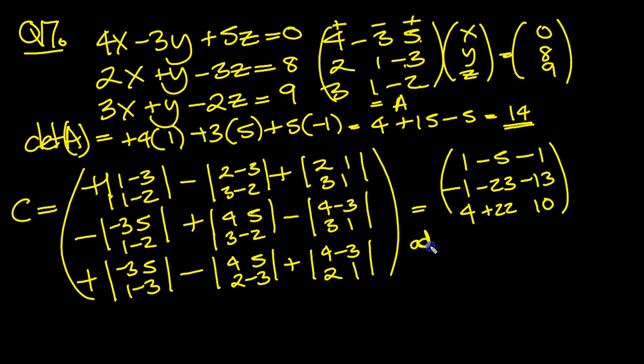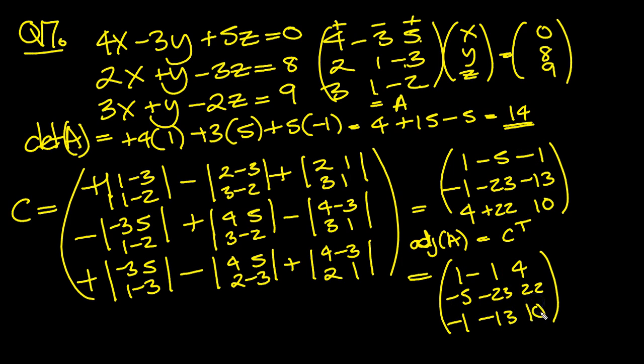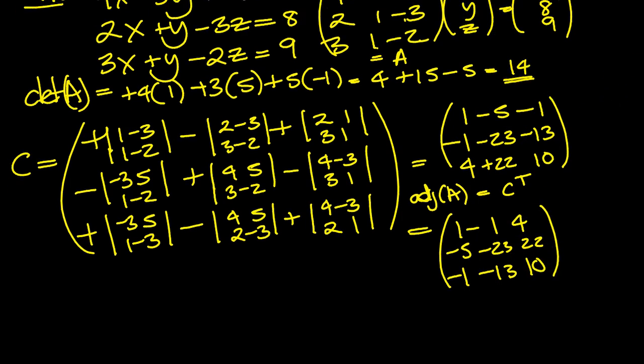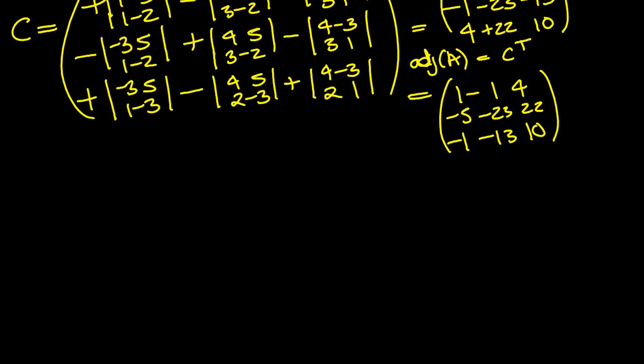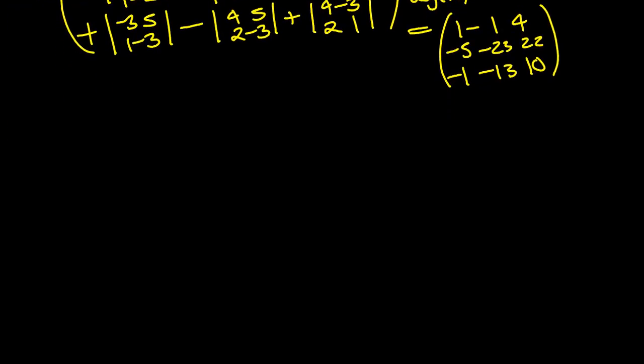There's the cofactor matrix, so now we can write the adjoint of the matrix A, which is C transpose. So we simply just have to swap the rows and columns around, don't we? So first column becomes the first row, second column becomes the second row, and the third column becomes the third row. There we go. So there's our adjoint matrix. So now we can just keep that in mind. The determinant's 14, so we'll have to remember that.